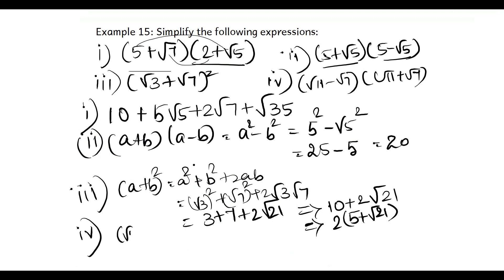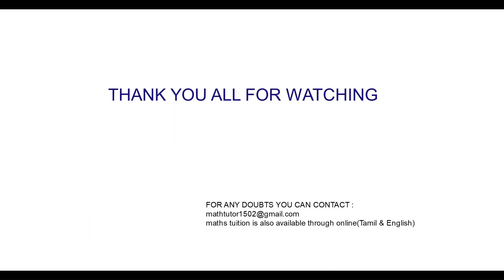Part iv: root 11 minus root 7 into root 11 plus root 7. This is like a minus b into a plus b, the result is a square minus b square. Root 11 the whole square minus root 7 the whole square. Root 11 into root 11 is 11, root 7 into root 7 is 7. So 11 minus 7 is 4.